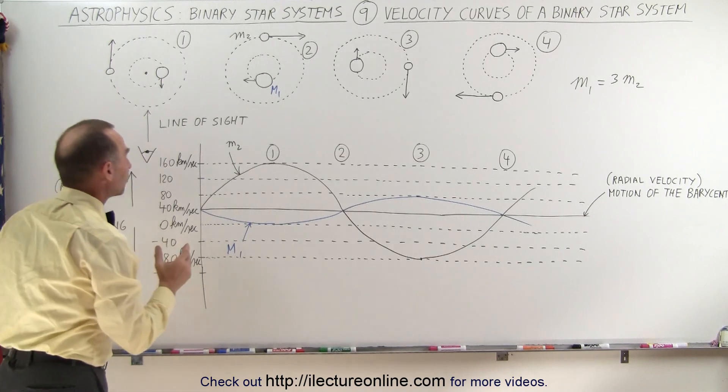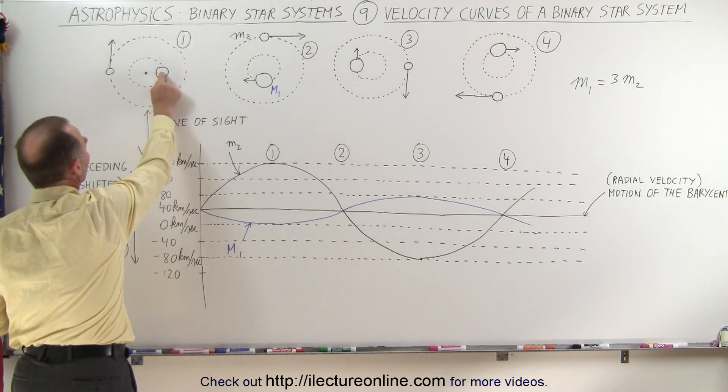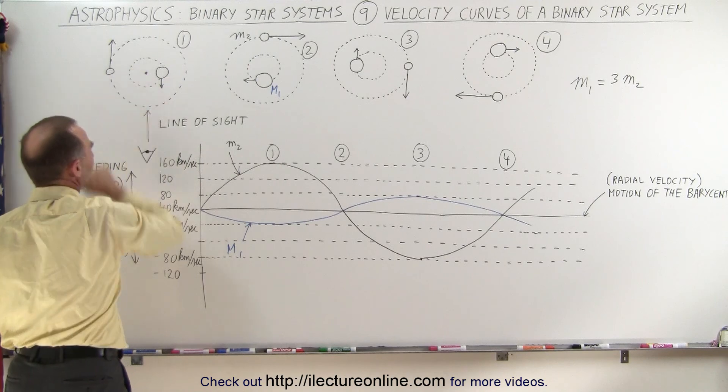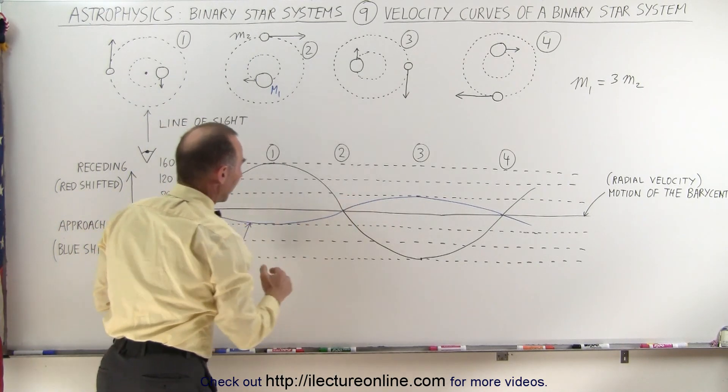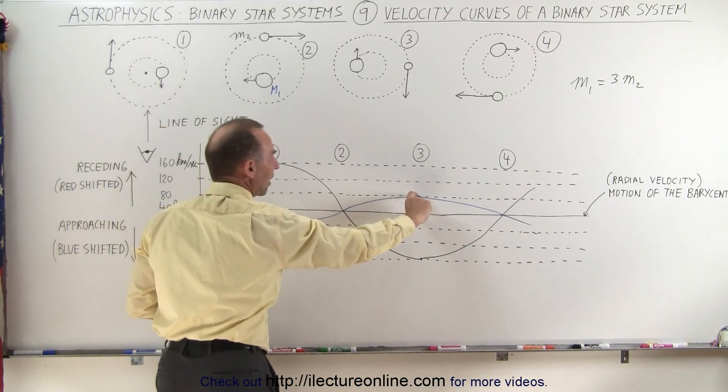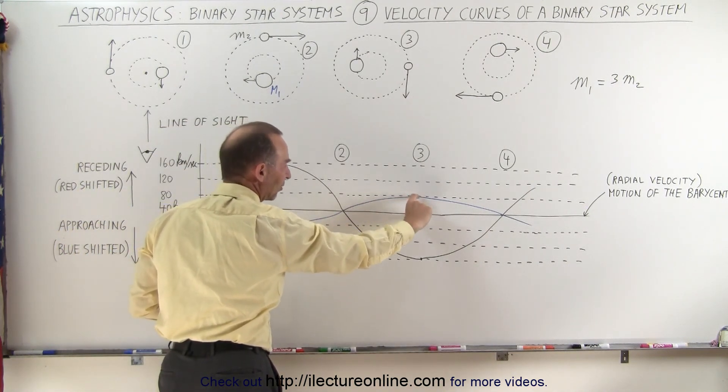The larger object, which is only one-third the distance from the barycenter compared to the small object, only has a velocity that's only one-third as fast, and you can see that here it's traveling 40 kilometers per second faster away from us than the barycenter, and here it's 40 kilometers per second slower.